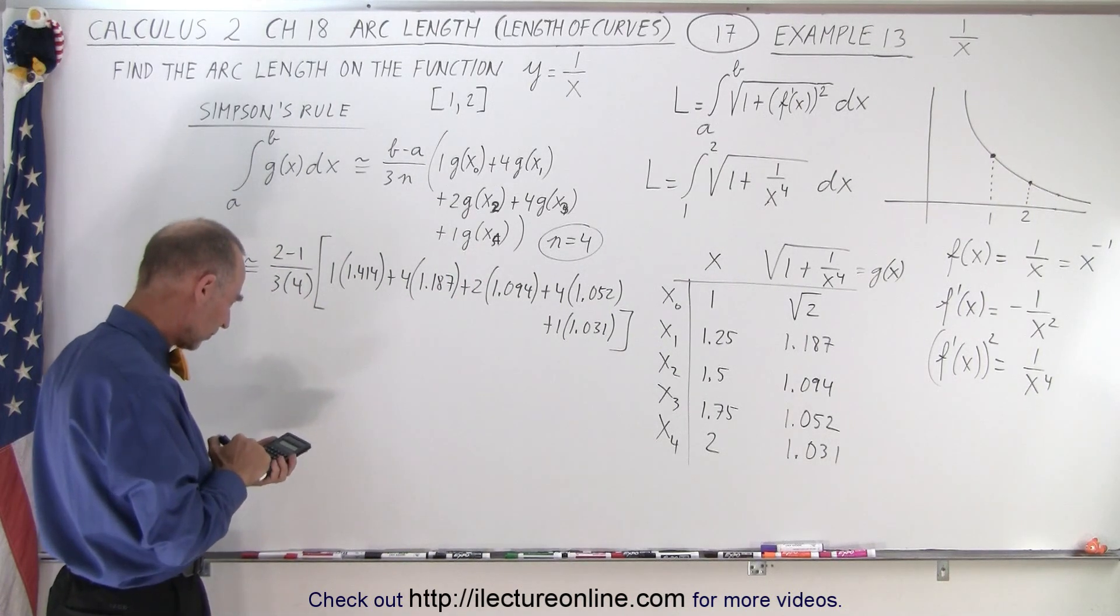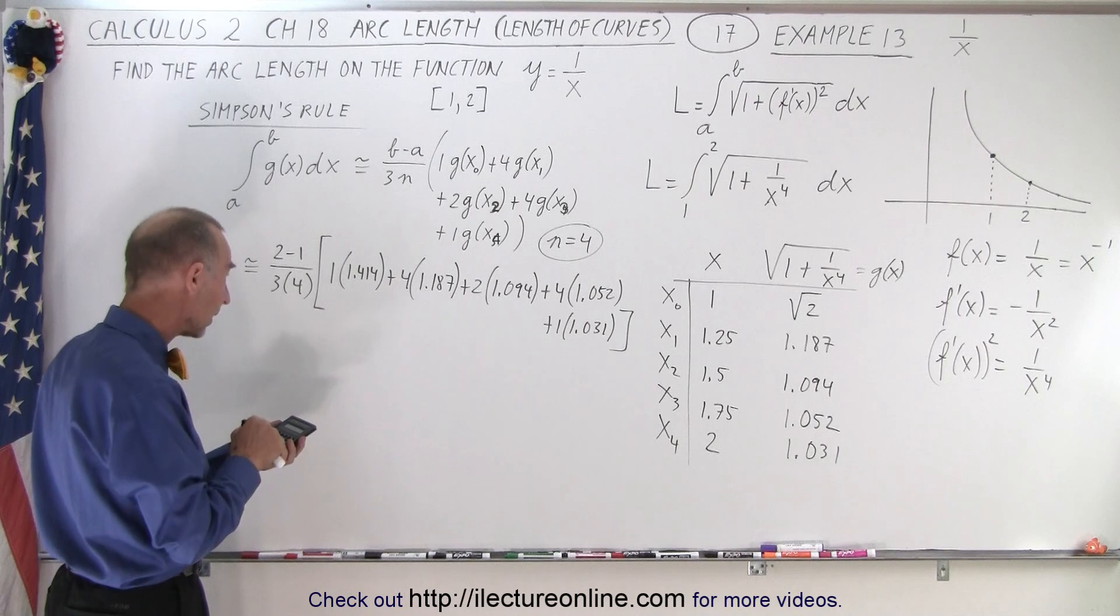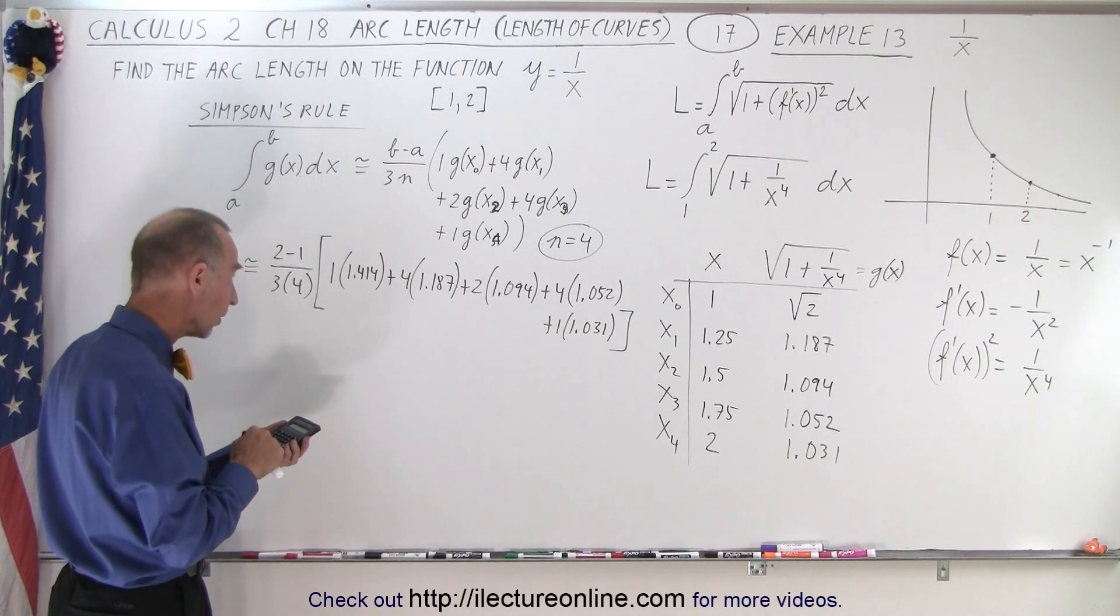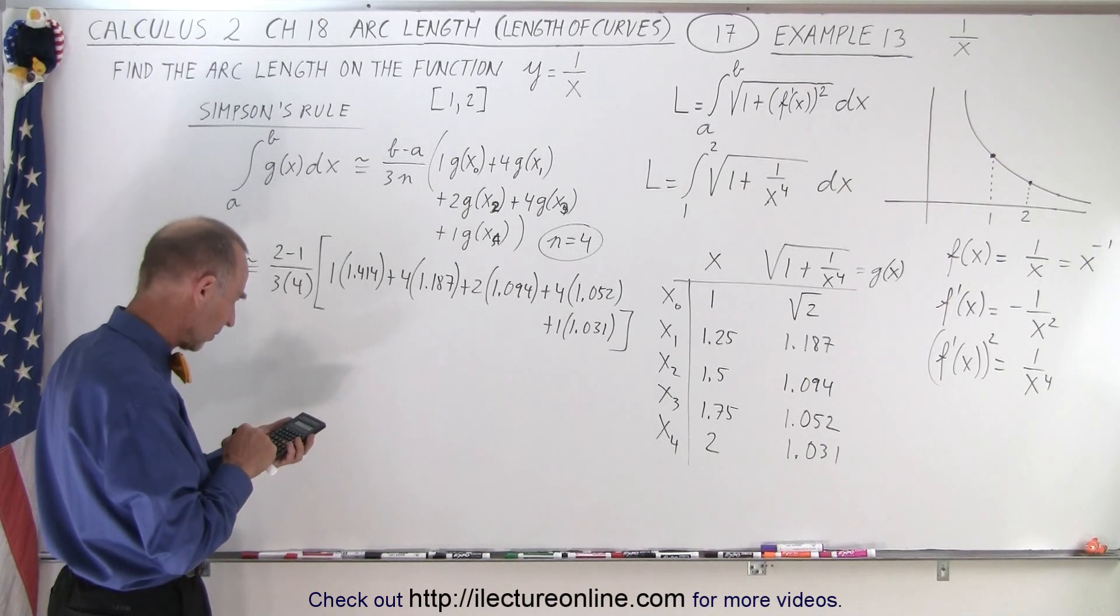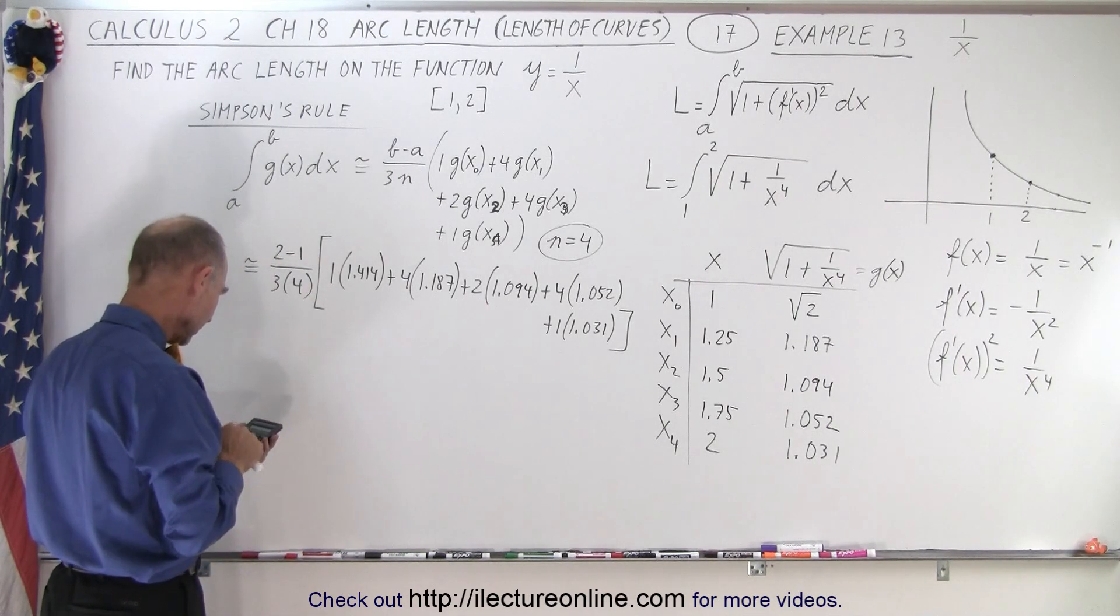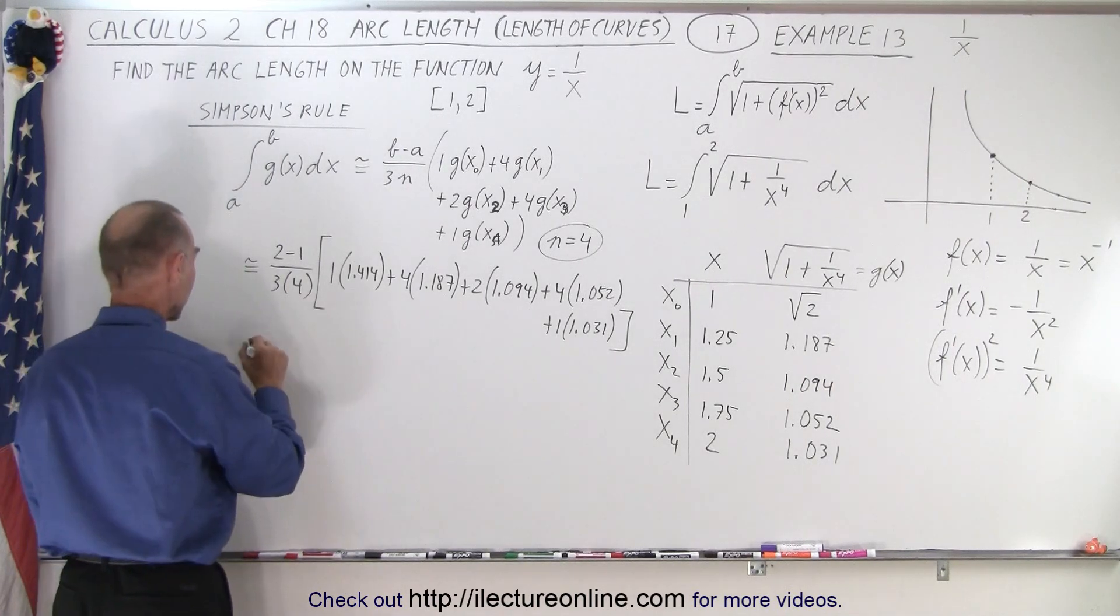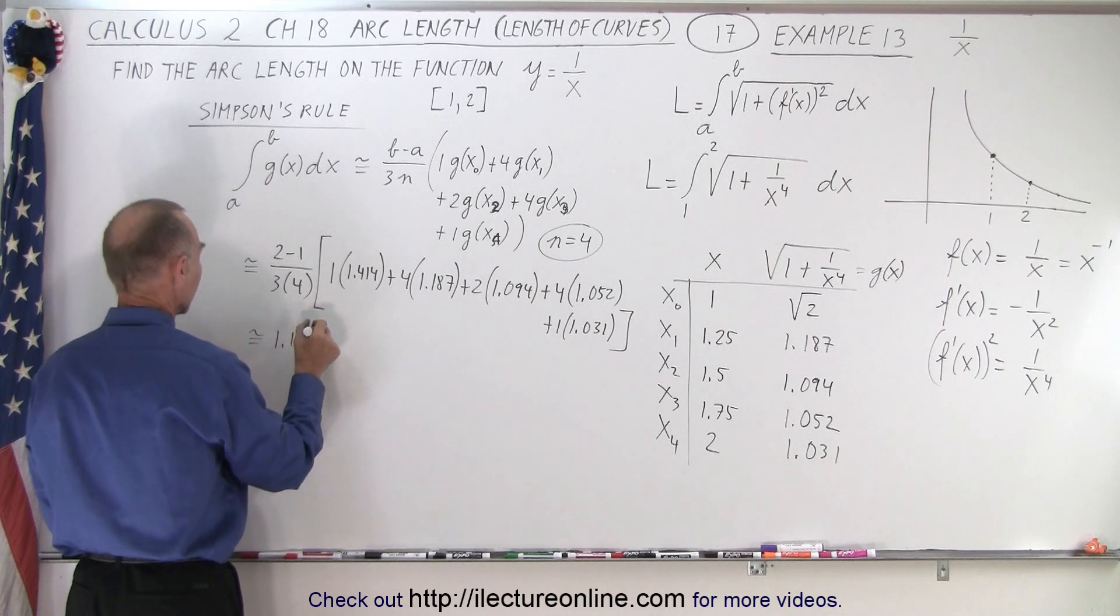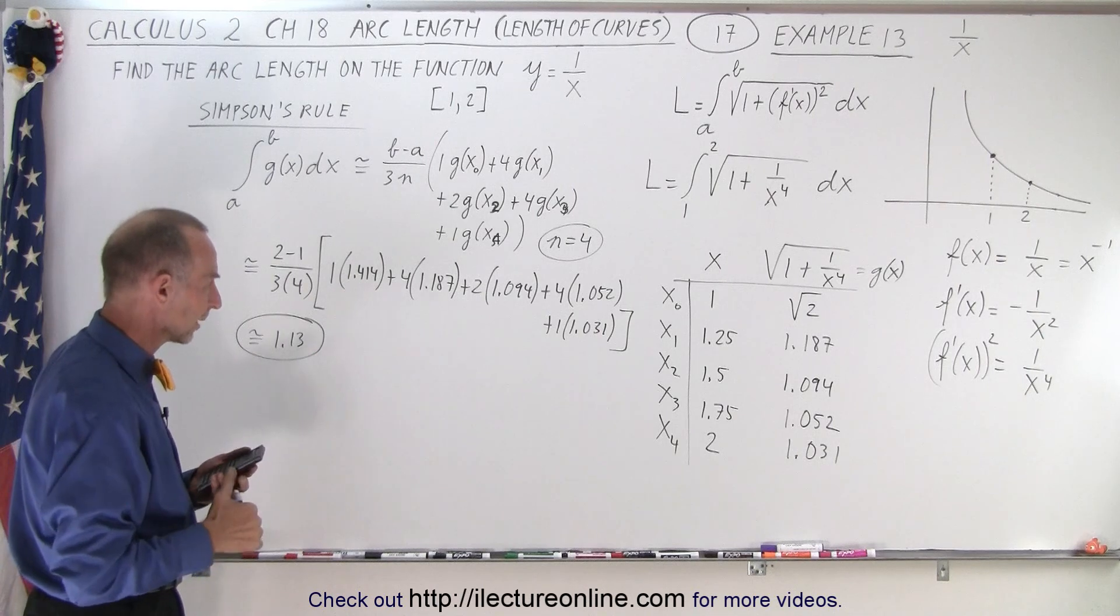And let's add all that together, see what we get. 1.414 plus 4 times 1.187 plus 2 times 1.094 plus 4 times 1.052 plus 1.031. And that's 1 divided by 12. So divide it by 12. And we get 1.13. Approximately 1.13. And so that was the approximate length of that piece on 1 over x.